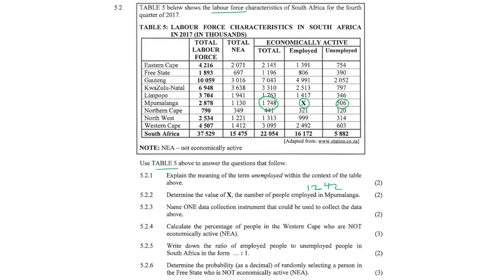Question 5.2.3: Name one data collection instrument that could be used to collect the data shown. You could have used a questionnaire, survey, census — since all nine provinces are represented here — document analysis, or interviews.